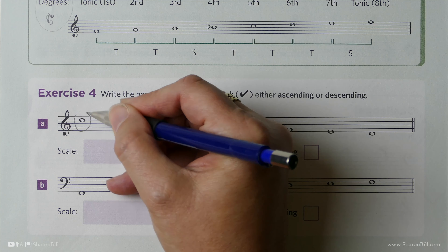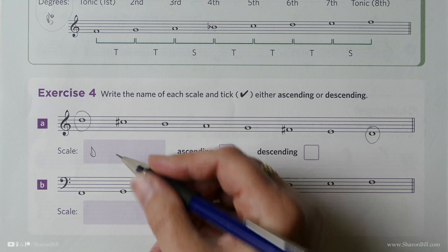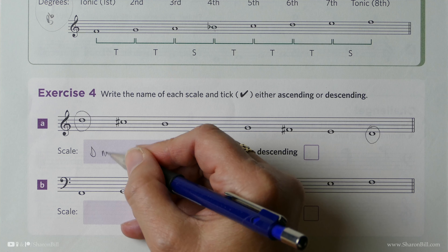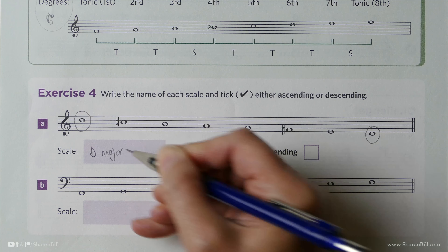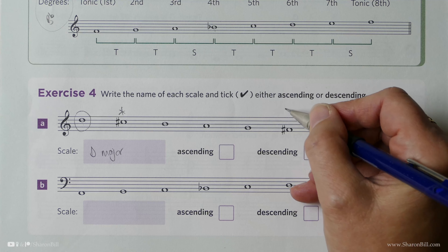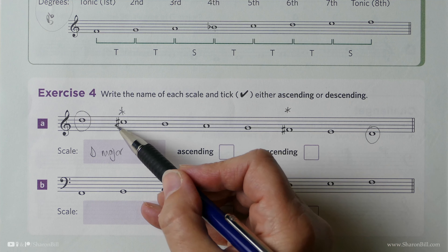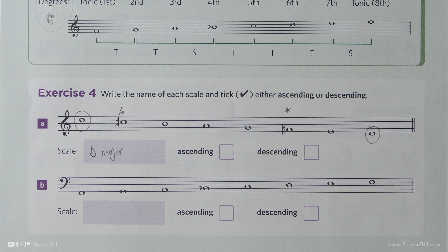So that's easily sorted once we remember that. We can see on the music the F sharp and C sharp for D major, or the B flat for F major. There's just a little bit of revision needed to remember which scale requires which sharp or flat. So let's put that into practice now in exercise four.